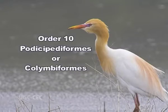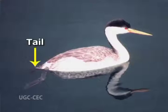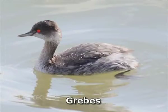Order 10, Podicipediformes or Colymbiformes — colymbus meaning diving birds; they are freshwater divers. Legs are placed far back on the body. Feet are lobed. Tail comprises a tuft of down feathers. Patella is large and tarsus is compressed. They are called diving birds because of their habits. Example: grebes.